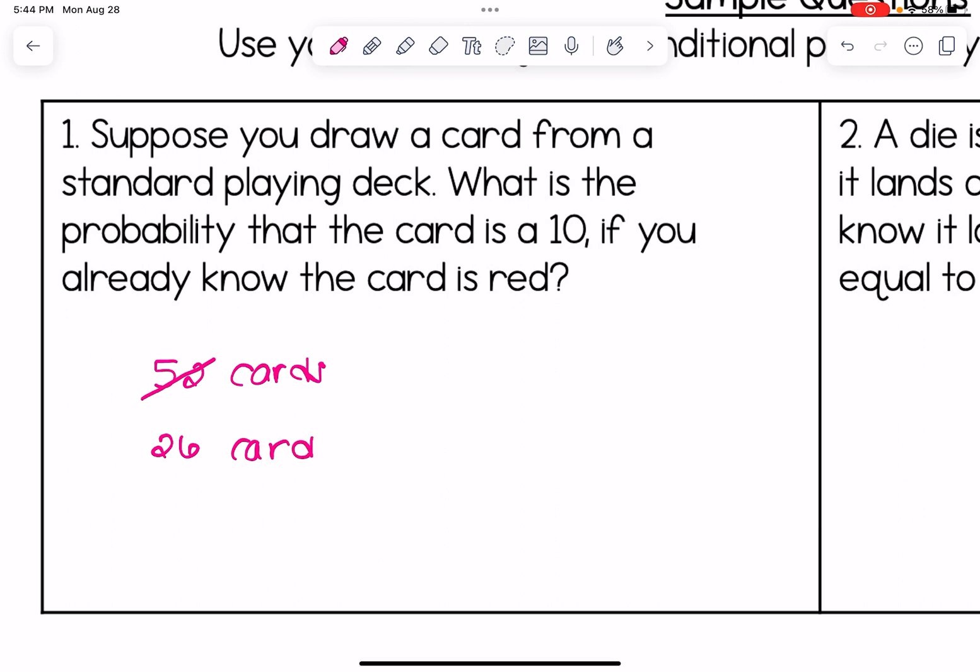And we have to think to ourselves, how many of those are going to be a 10? Out of those 26 cards, I would have a 10 of diamonds and I would have a 10 of hearts. So two out of those 26 would be a 10, and we could reduce that to give us 1/13.